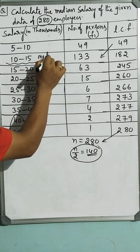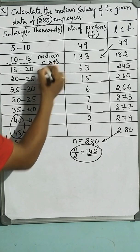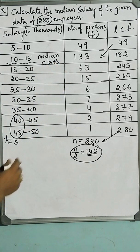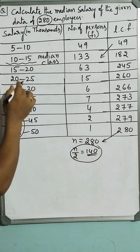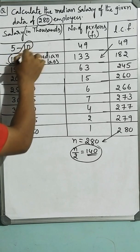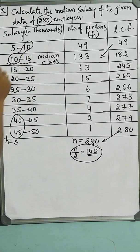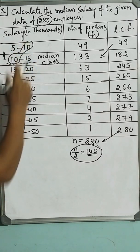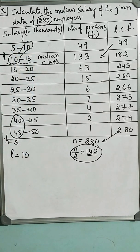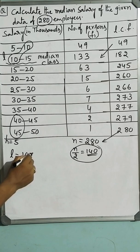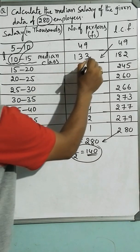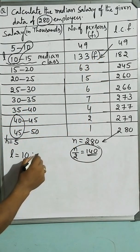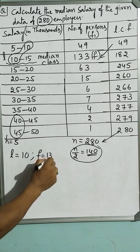So this is the median class. From this median class, we can decide three things. One is lower bound of the median class, that is the average of these two limits. Lower bound is represented by l. Average of these two is 10 plus 10 by 2 becomes 10. And median class frequency, small f, that is 133.